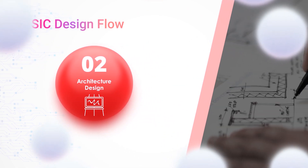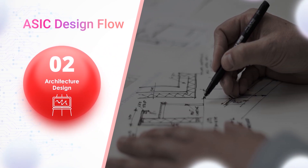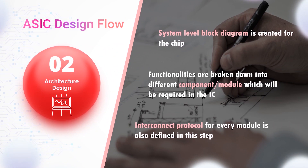Architectural Design: In this step, a system-level block diagram is created for the chip. The functionalities are broken down into different components which will be required in the IC. Also, the interconnect protocol for every module is defined in this step. For example, any one protocol amongst AMBA AXI, AHB, or ASB can be chosen as an interconnect protocol.